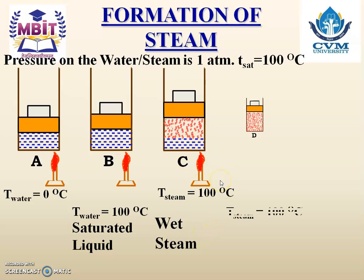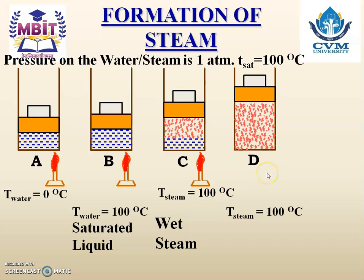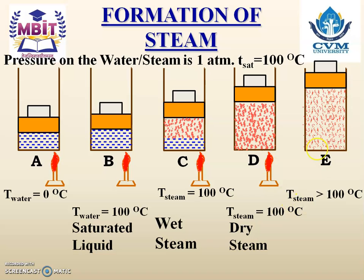If we continue to heat, we will get point D where all water is converted into steam — it is filled with only steam. At that time also, temperature of steam is 100 degree Celsius, and this type of steam is known as dry steam. If we continue to heat again, then the dry steam will be heated more and more and it will become superheated steam. The temperature of steam at that point is more than the saturation temperature, and it is known as the superheated steam. So now let us study all these points one by one in detail.